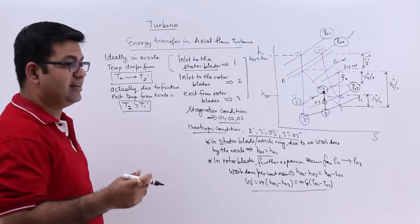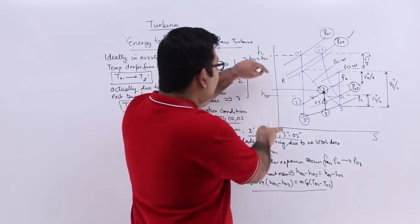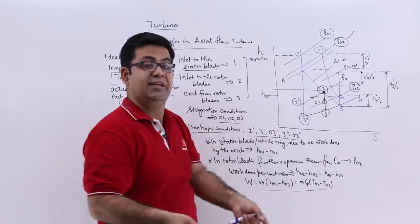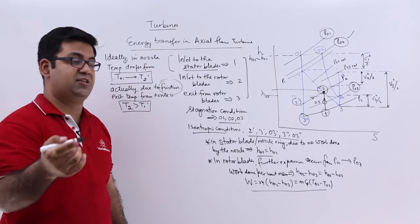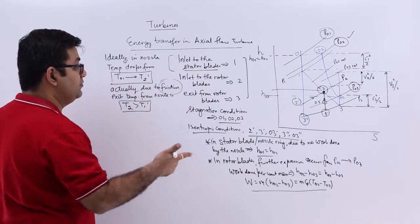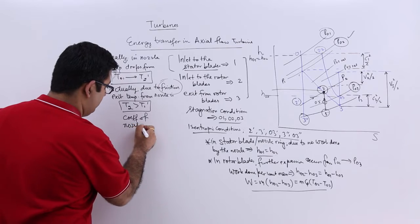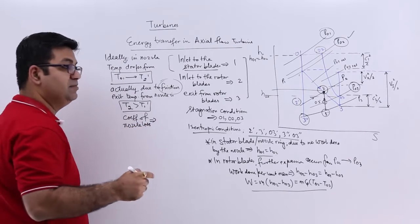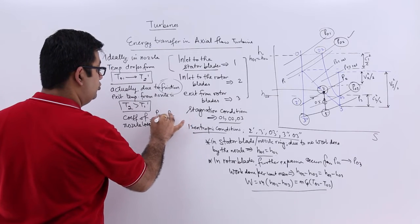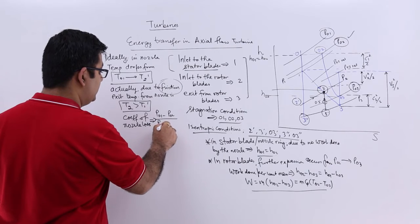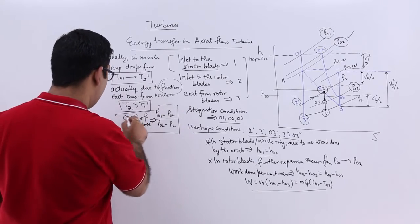This means there is a certain amount of enthalpy loss in the nozzle due to friction. The coefficient of nozzle loss in terms of pressure is P01 minus P02 divided by P02 minus P2. This is the coefficient of nozzle loss.